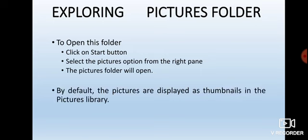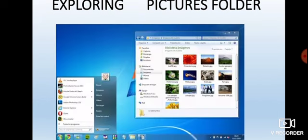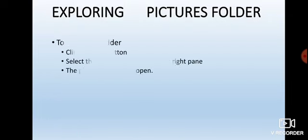By default, the pictures are displayed as thumbnails in the Pictures library. There are different types of views available for pictures. Thumbnails means we can see a small icon of the picture — we can see what is in the picture. Similarly, we can view all the pictures in the folder as small icons as well as large icons.